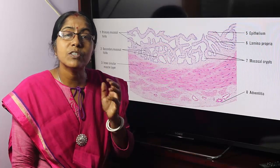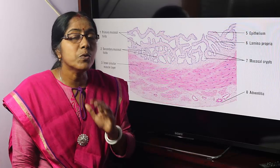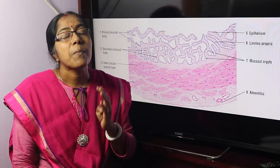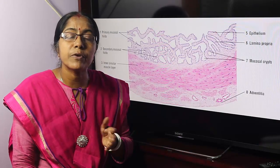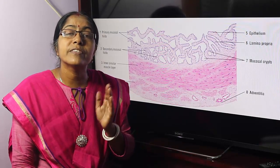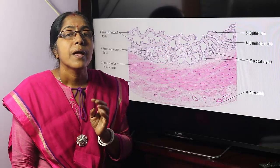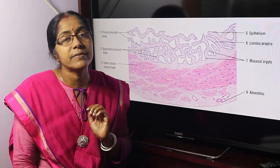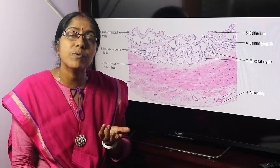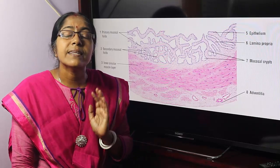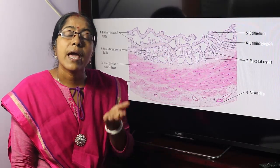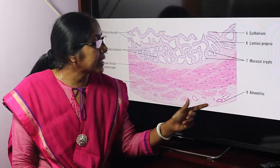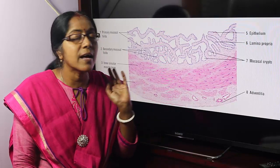The connective tissue cells are of two types: permanent cells and migratory cells. Permanent cells include fibroblasts, fibrocytes, and adipocytes. Migratory cells include neutrophils, eosinophils, basophils, lymphocytes, and plasma cells. The connective tissue fibers are collagen fibers, elastic fibers, and reticular fibers. Connective tissue is highly vascular, containing both blood vessels and nerve supply.